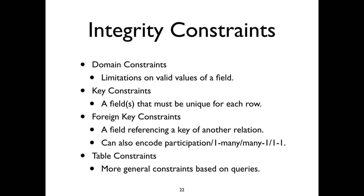Then there are foreign key constraints — a way of saying that records in one relation are linked to records in another relation. For example, officer is linked to ship through both the crew and the commands relation. Specifying these kinds of relations helps the database keep track of things, and can simplify the matter of organizing your data — if a ship gets sucked into a black hole, its crew go poof, and you want that reflected in the database. Finally, table constraints are essentially a catch-all term for everything else.